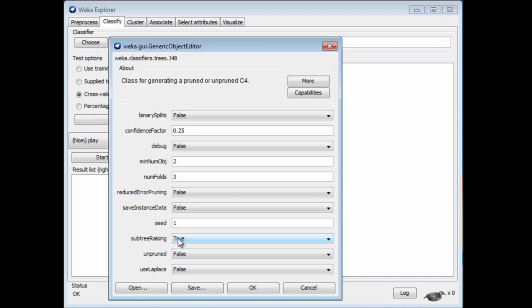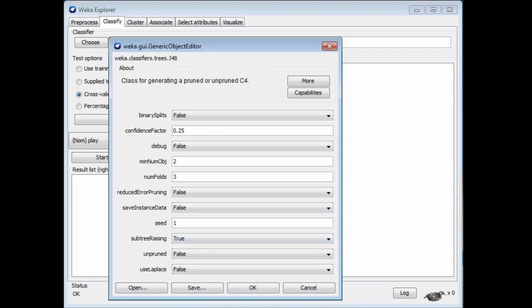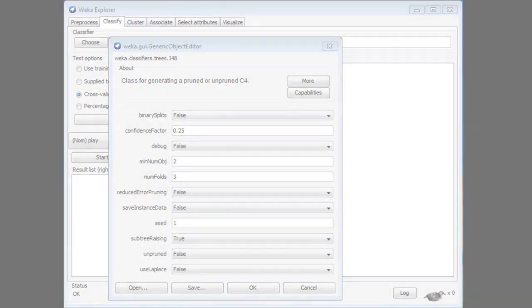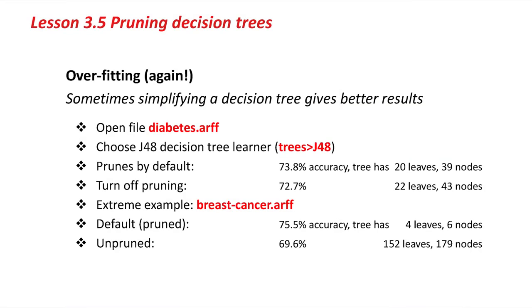I'm not going to talk about the details of these methods — pruning is a messy and complicated subject, and it's not particularly illuminating. I don't really recommend playing around with these parameters; the default values on J48 tend to do a pretty good job. The need to prune is really a result of the original unpruned tree overfitting the training data set. Sometimes simplifying a decision tree gives better results — not just a smaller, more manageable tree, but actually better results.